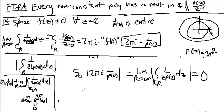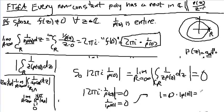So, what do I have? I have the modulus of 2 pi i times 1 over p of 0 equals 0, which implies that 1 over p of 0 is equal to 0, which implies that 1 is equal to 0 times the modulus of p of 0, which is a real number, which equals 0.